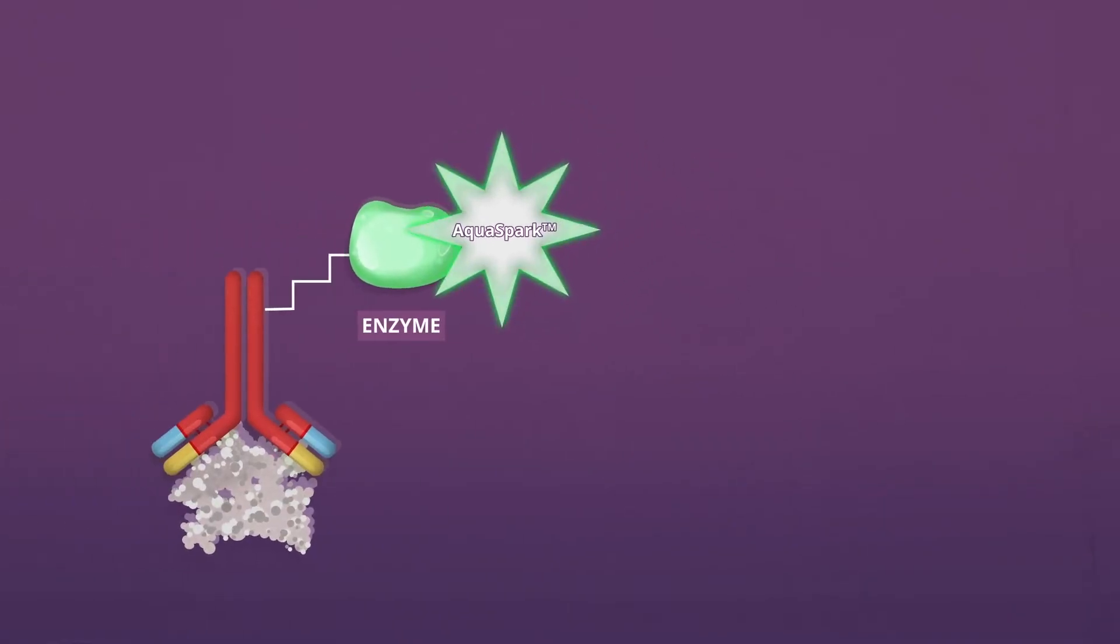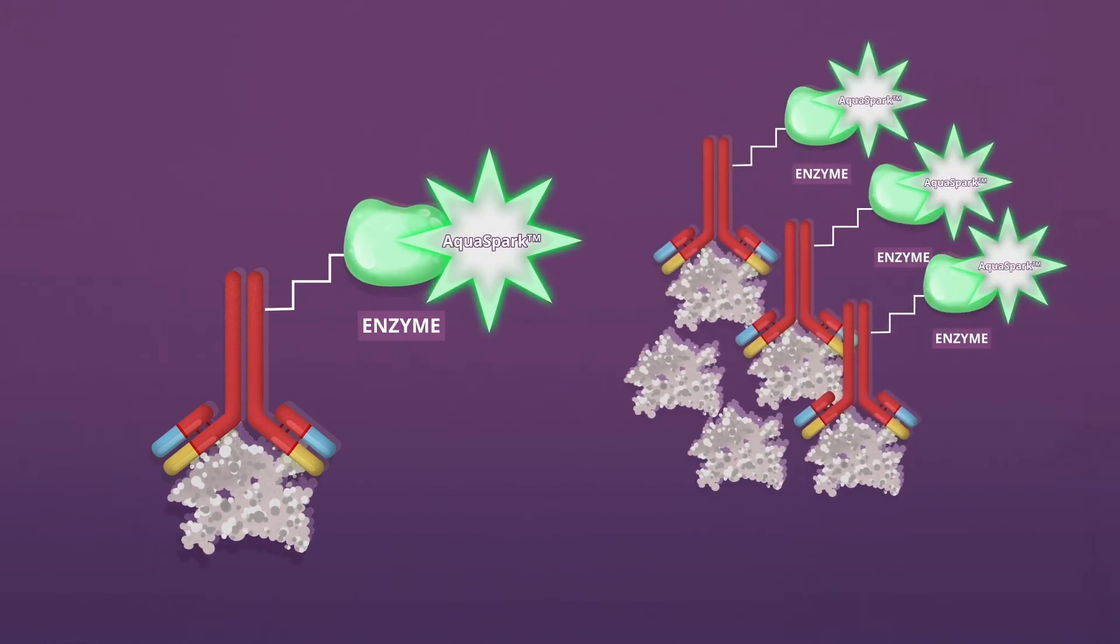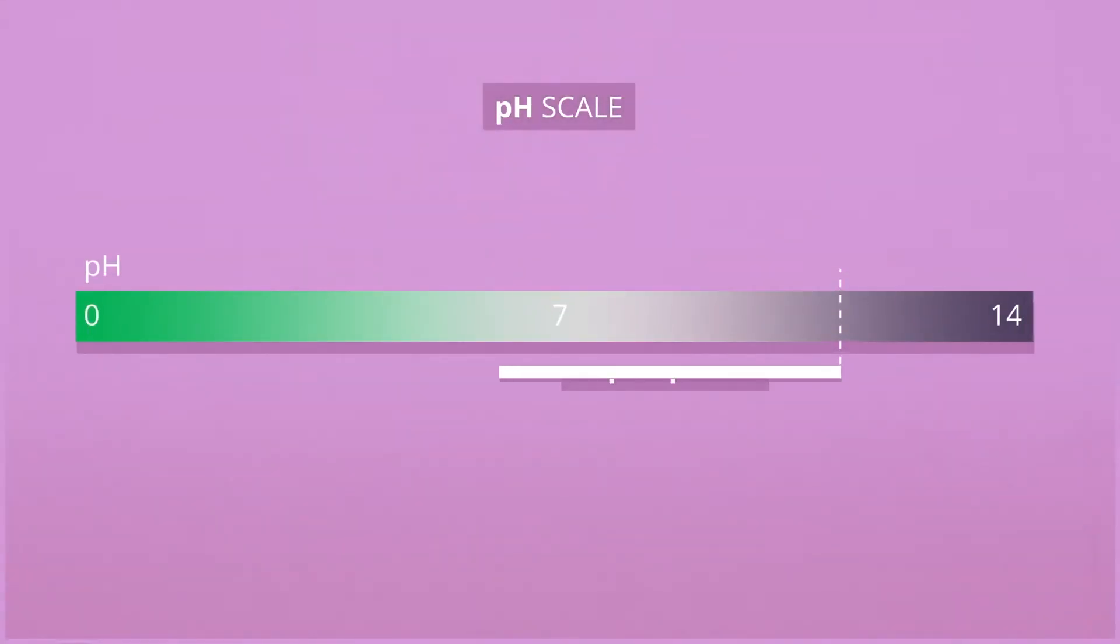Aquaspark phosphatase substrates provide accurate measurements of even very low and very high protein quantities. It works at alkaline and neutral pH, expanding the possible application range.